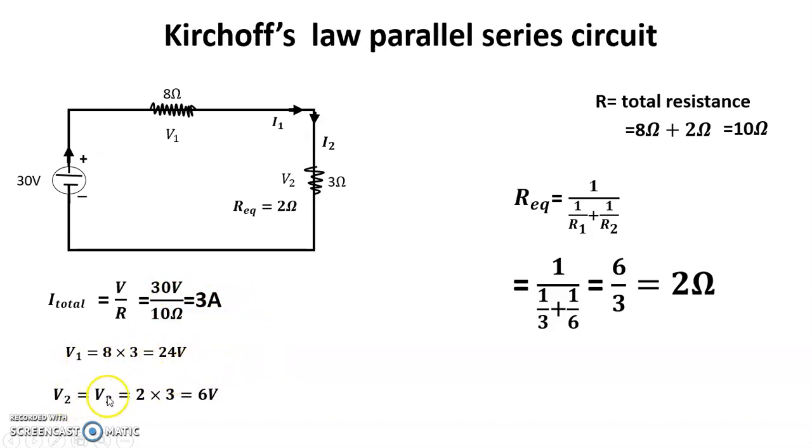V1 equals V2 equals V3 because this is a parallel series, meaning same voltage. So V2 equals V3, so it is 2 times 3, because equivalent resistance times current. V equals IR, I equals 3 and R equals 2, so this is 6 volt.